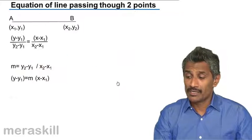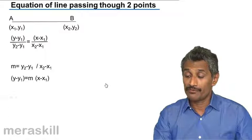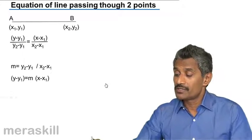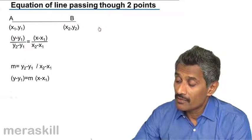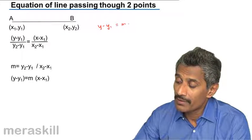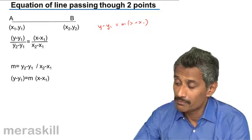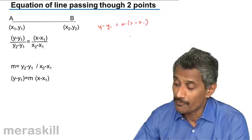Then a further addition to this is called the two-point form. Now, if you see the previous one, one was y minus y1 is equal to m into x minus x1. This is the point slope form.